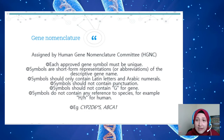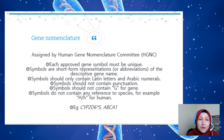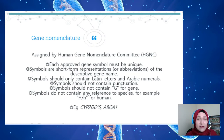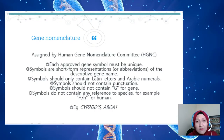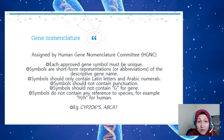Now we come to gene nomenclature. There are specific ways to write a gene name — we cannot simply name a gene arbitrarily. Each gene name is assigned by the Human Gene Nomenclature Committee. Each approved gene symbol must be unique, and symbols are short abbreviations of descriptive gene names. They should only contain Latin letters and Arabic numerals, no punctuation, no 'G' for gene, and no species references such as 'H' for human. Examples include CYP2D6*5 and ABCA1.